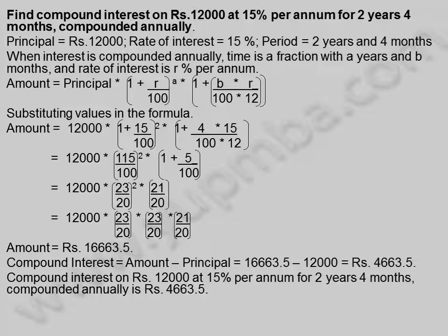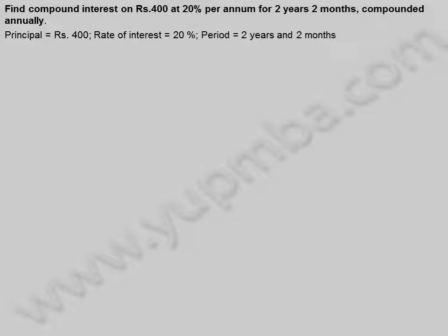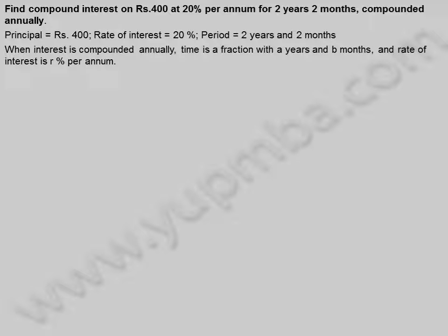Let us see another example. Find compound interest on 400 rupees at 20% per annum for two years two months, compounded annually. Principal is equal to 400 rupees, rate of interest is equal to 20%, and period is equal to two years and two months.